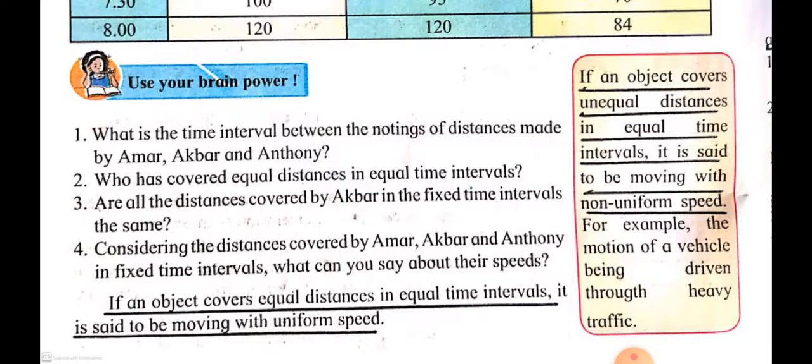First question: what is the time interval between the noting of distances made by Amar, Akbar, and Anthony? The other question is: considering the distance covered by Amar, Akbar, and Anthony in fixed time intervals, what can you say about their speeds?